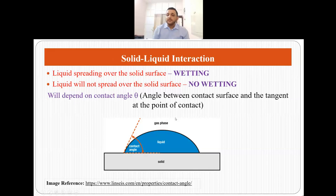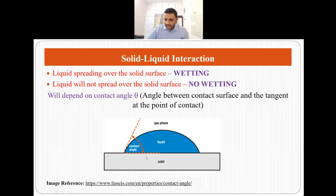This solid-liquid interaction can occur in two ways. Either the liquid will spread over the solid surface and wet it, or it will not wet the solid surface. This is dependent on the contact angle. If this is your solid and this is your liquid droplet, the angle between the contact surface and the tangent at the point of contact is called the contact angle, and this determines whether the liquid will wet the solid or not.